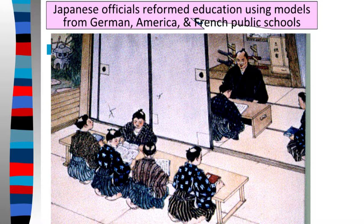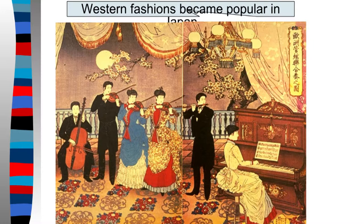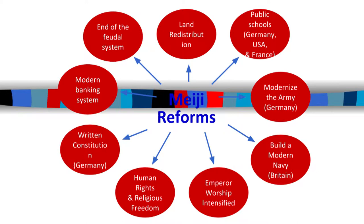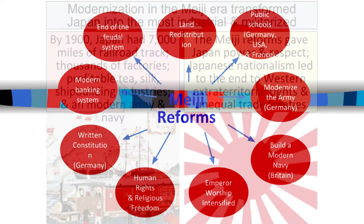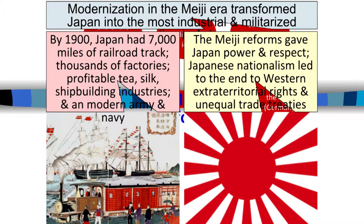They also started adopting Western fashions and a different sense of style, really modeling after the European sense of style in the late 1800s. From the Meiji era, you get this big sense of modernization that very quickly transforms Japan into the most industrial and militarized state anyone had seen. By 1900, Japan had about 7,000 miles of railroad track, thousands of factories, a big tea and silk industry, a shipbuilding industry, and a huge modern army and Navy.